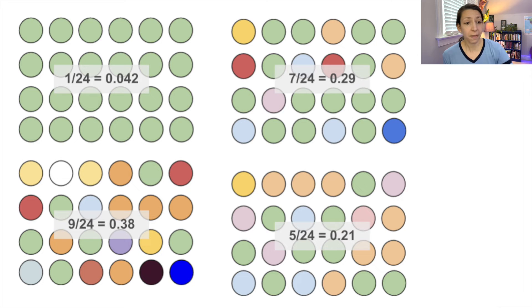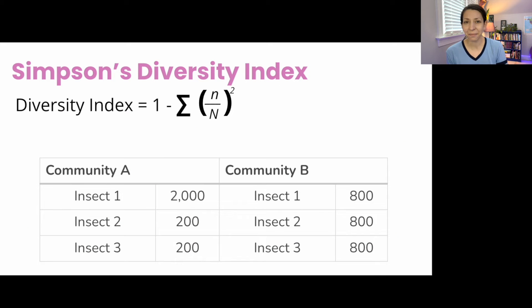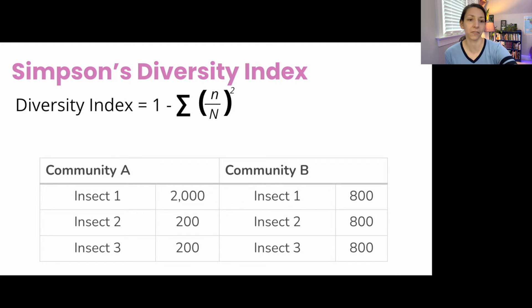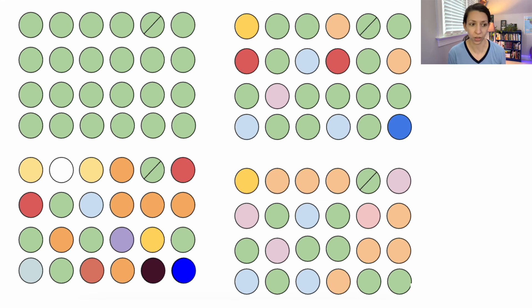In the first environment we have just one color — one species out of 24 organisms. The second has seven different colors out of 24, the third has nine different colors out of 24, and the fourth has five different colors out of 24. The ecosystem with nine species had the highest biodiversity using this calculation. If you continue to study biology, you'll encounter other methods like Simpson's biodiversity index, Shannon-Wiener, and calculations for species evenness and species richness, each serving a different purpose.